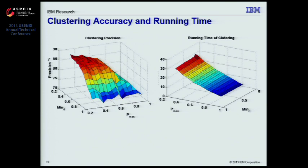Remember, Pmax is the threshold for the distance between the prototype and every nearby data point. So a smaller Pmax forces the algorithm to find more prototypes to cover the overall dataset, incurring longer computation time for both clustering and prototype selection. On the other hand, minD has a greater influence on accuracy. A smaller minD will stop the merging process earlier, avoiding merging unrelated clusters into bigger clusters. However, the downside is it tends to result in sub-optimal clusters, breaking big families into many small ones. Empirically, we found Pmax = 0.4 and minD = 0.3 to strike a good balance between accuracy and running time.